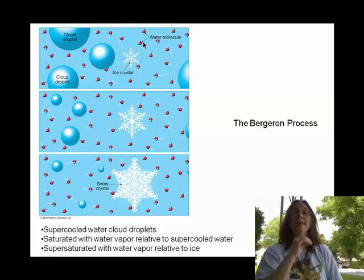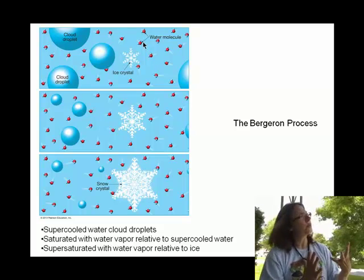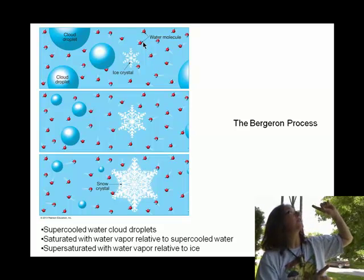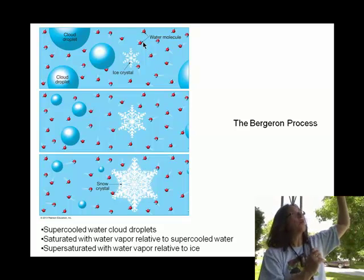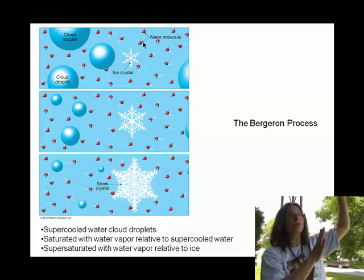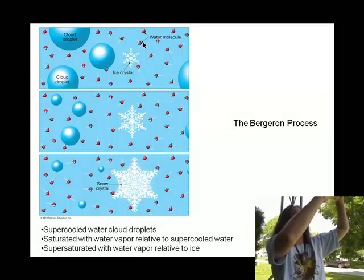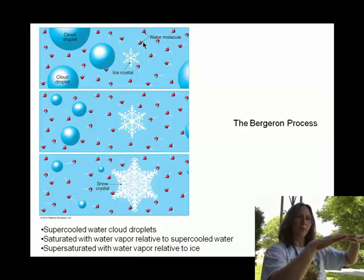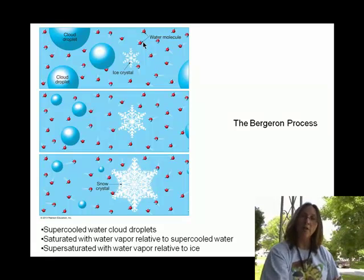That's the Bergeron process. It's refreshing to know that often our spring showers start out as this process in the cloud above. In the troposphere, as you get closer to Earth's surface, the air warms up — unless there's a temperature inversion. So those ice crystals get warmer and warmer, and at some elevation before they hit the ground, they melt and continue to fall as what we call rain.